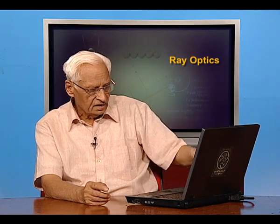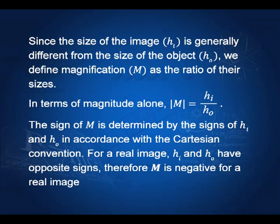M is negative for a real image because in a real image, the image is inverted with respect to the object, so m carries a negative sign. If the image is virtual, then we have seen that it is erect — it is in the same direction — and therefore the two heights have the same sign, so m is positive.